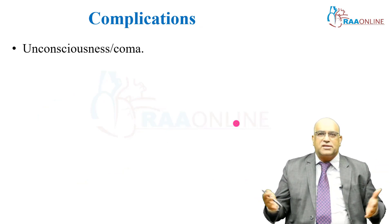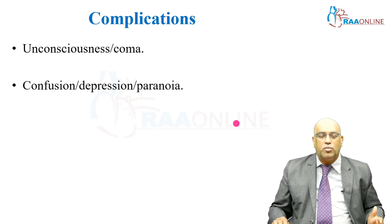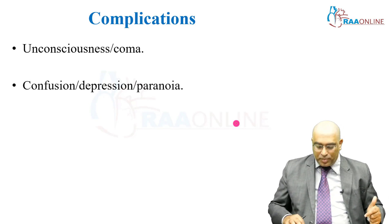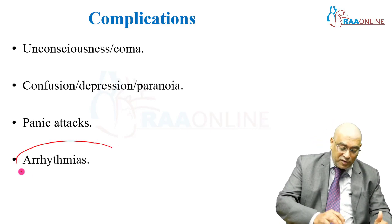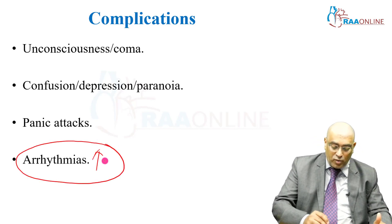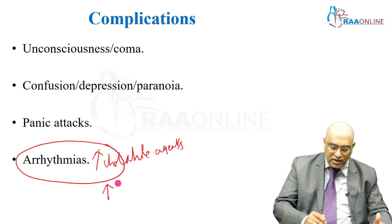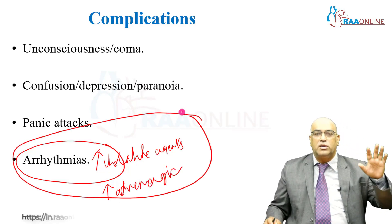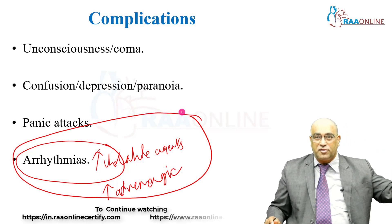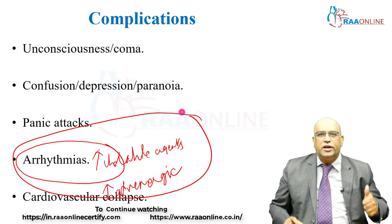What are the various complications that can happen with hypercarbia? They include unconsciousness, coma, confusion, depression, or paranoia. Panic attacks can also occur. Arrhythmia is very common, especially with increased volatile agents or increased adrenergic stimulation — these are a very bad combination. Increased volatile agent or adrenergic stimulation combined with hypercarbia can lead to dangerous arrhythmia and cardiovascular complications.